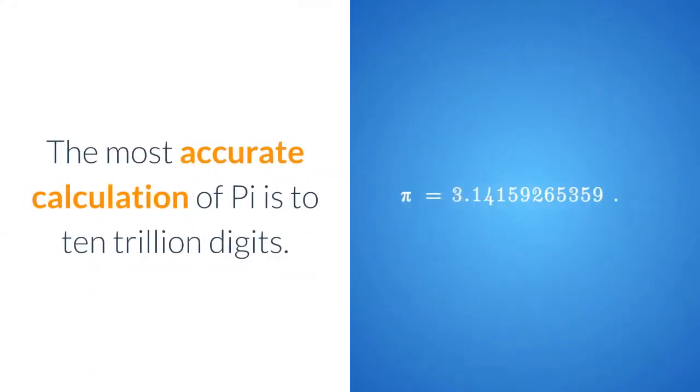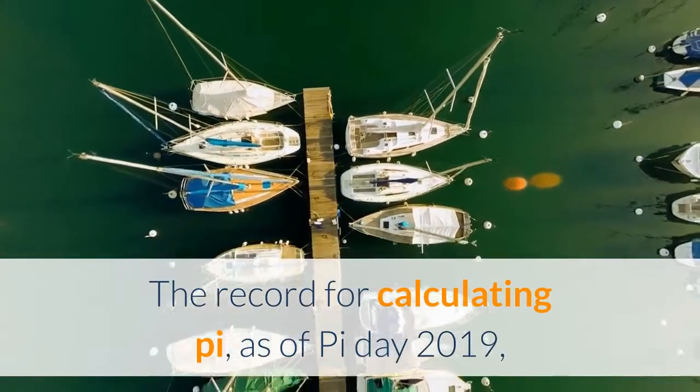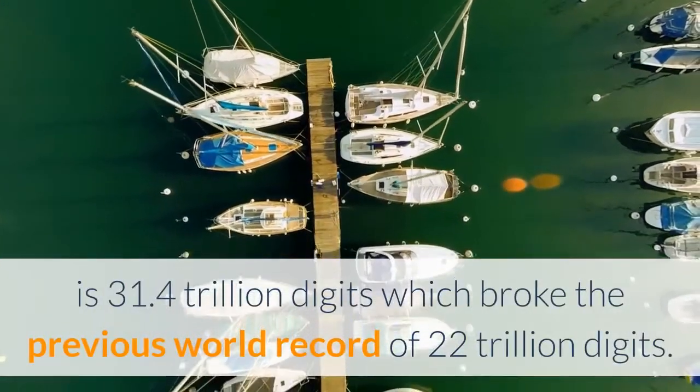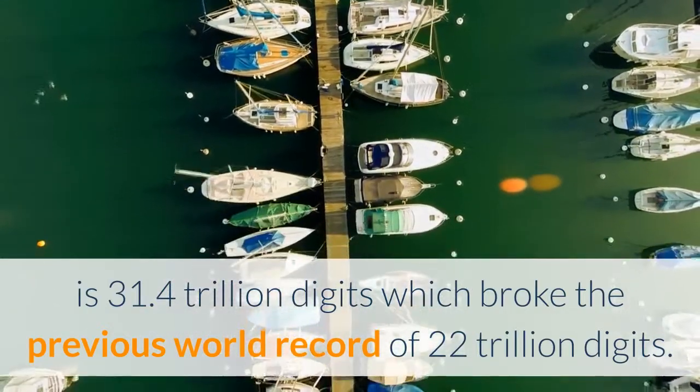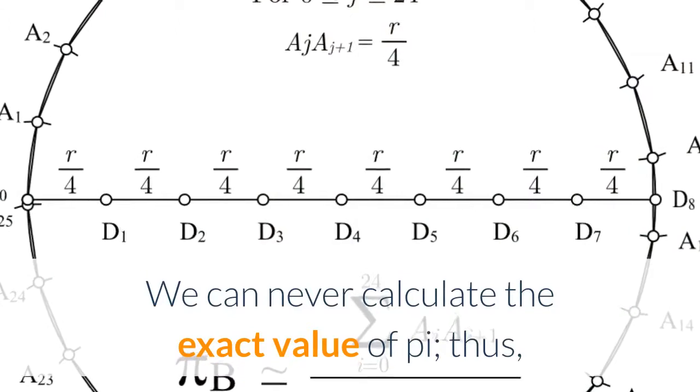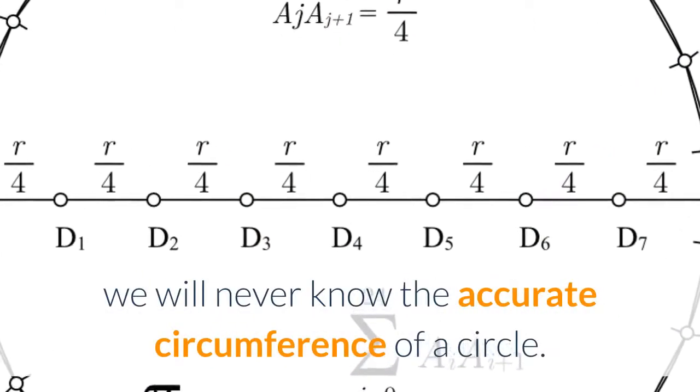The most accurate calculation of Pi is to 10 trillion digits. The record for calculating Pi, as of Pi Day 2019, is 31.4 trillion digits, which broke the previous world record of 22 trillion digits. We can never calculate the exact value of Pi, thus we will never know the accurate circumference of a circle.